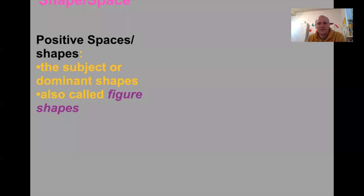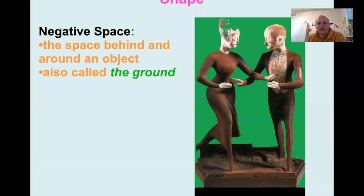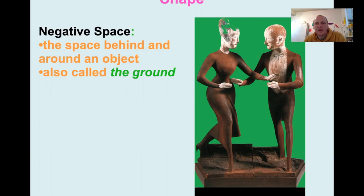The green is the background and ground — the negative shapes, the negative space. You can see the shape that happens in between the arms: all those little semi-triangular shapes underneath their arms. Those are shapes but they're negative space shapes, whereas the figures themselves are positive shapes.